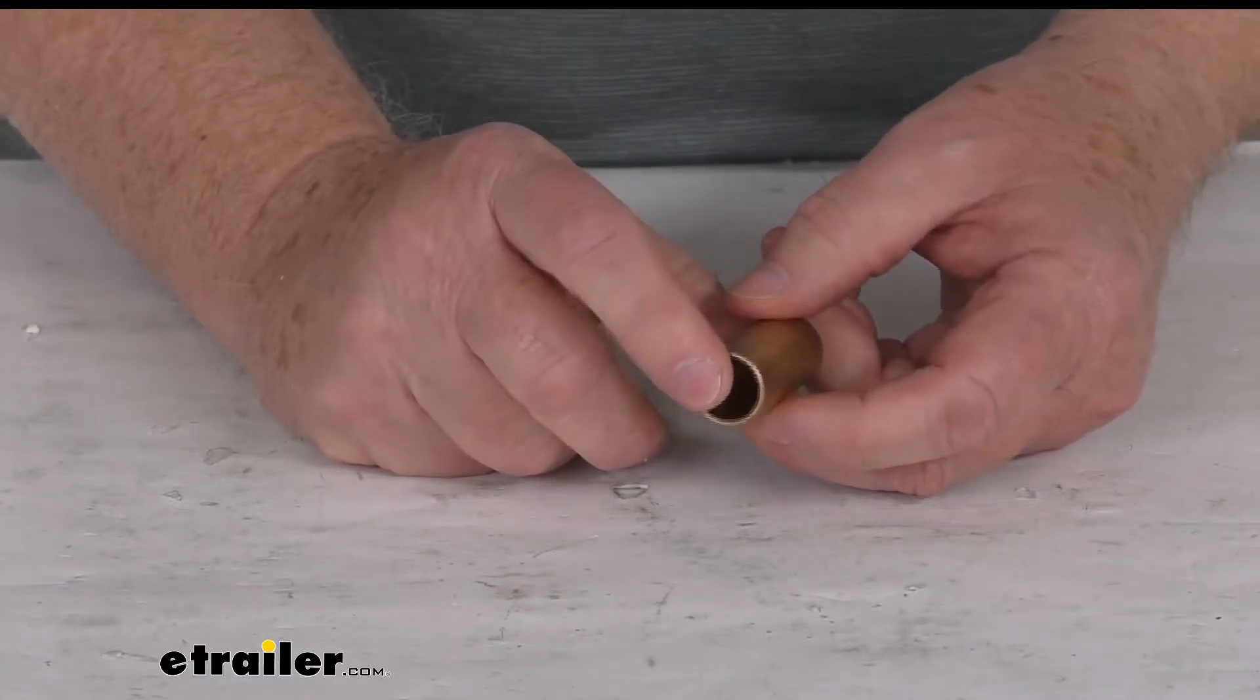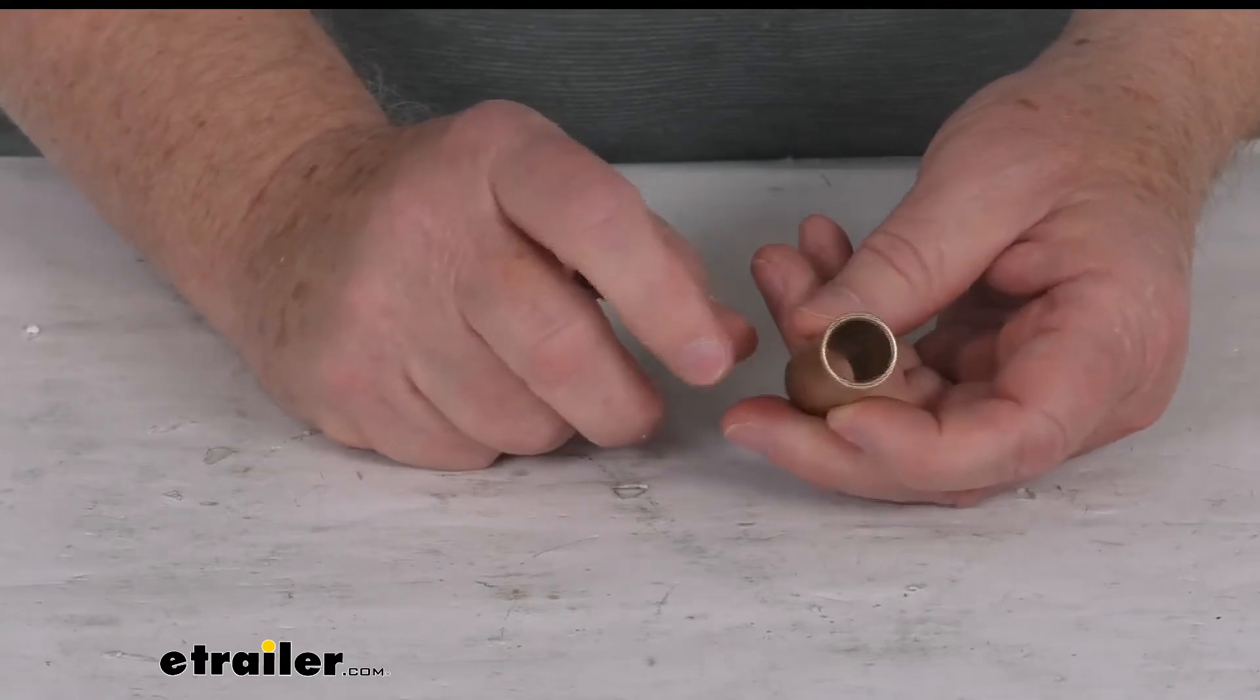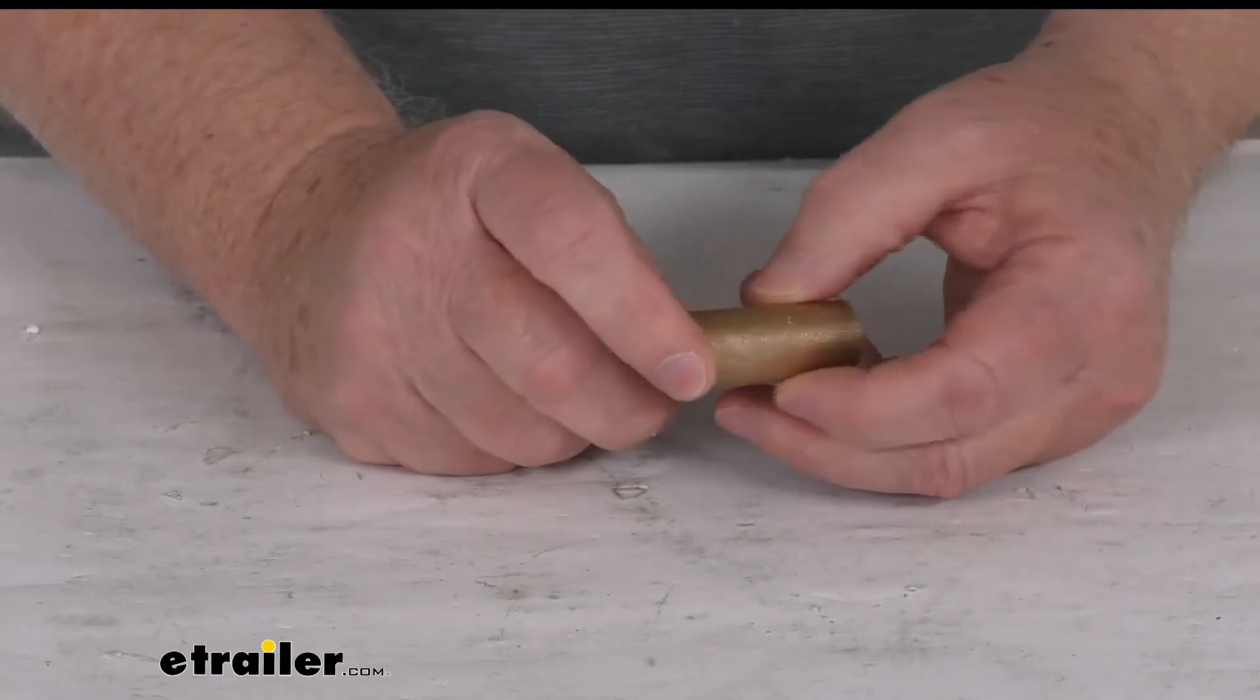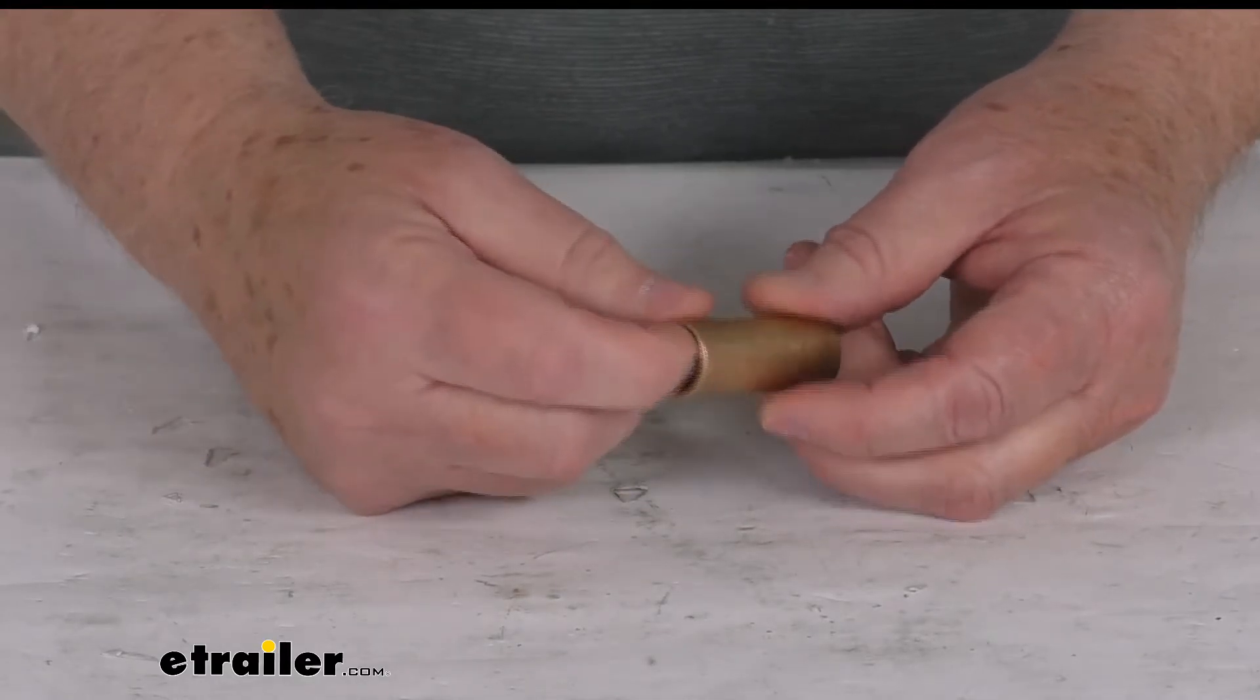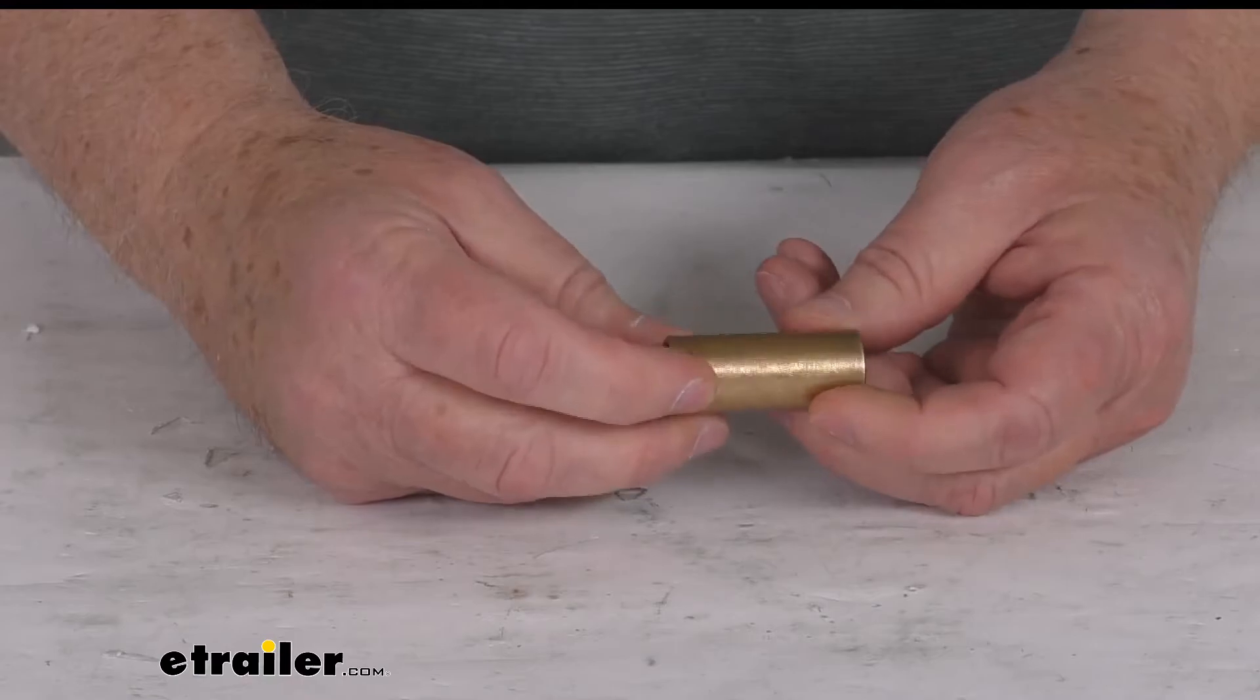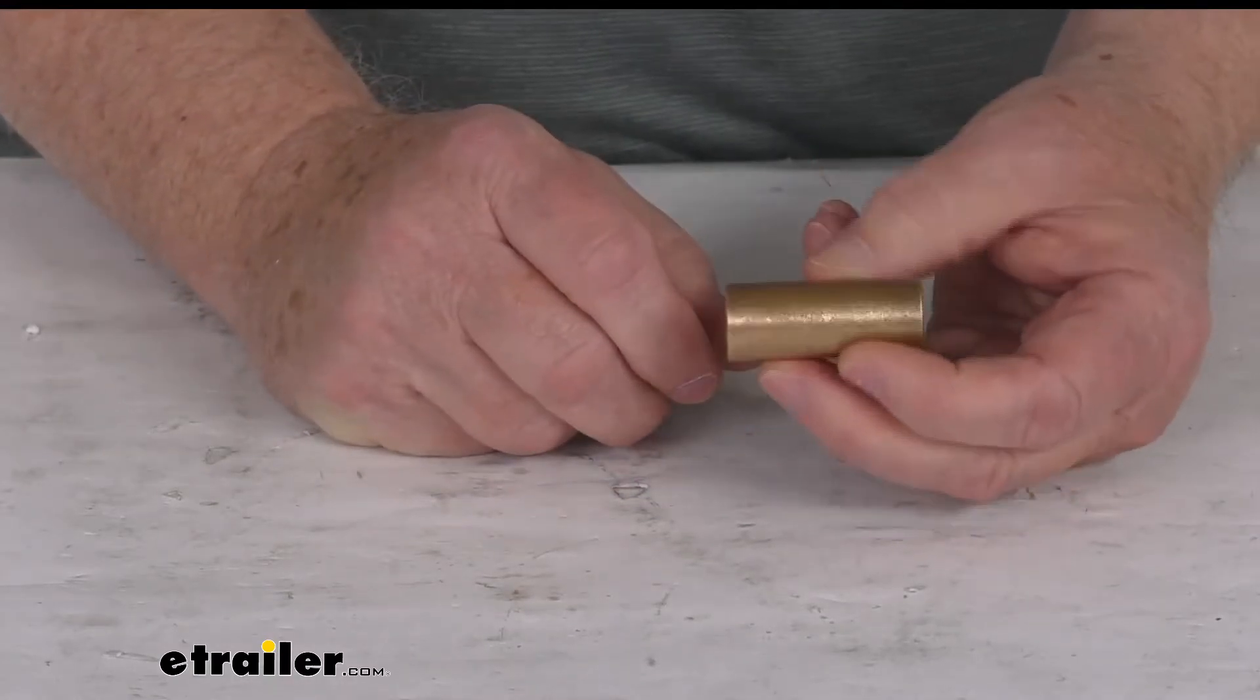The nylon bushings do the job but they're not designed to last forever. What's nice with these bronze bushings is they'll work well with the wet suspension bolts that allow you to pump grease into the bolt, and that grease will lubricate the inside of this bushing to give you a lot longer life on your suspension system.